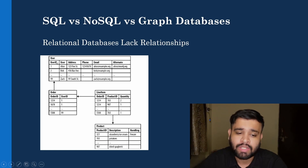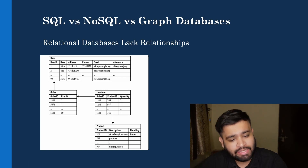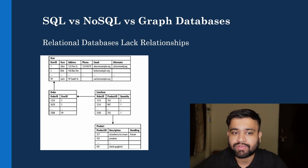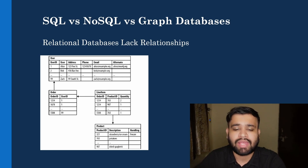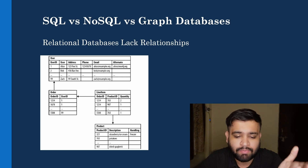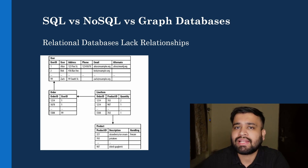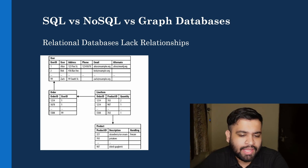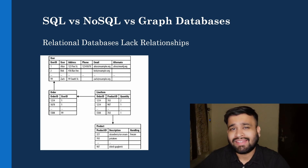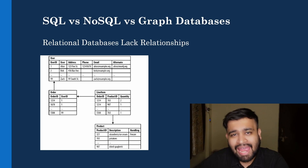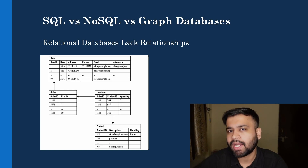In this model we have multiple tables: a user table with all attributes for a particular user, an order table with order ID and user ID, a line item table with product ID and quantity, and a product table with all product details. Maintaining foreign keys across all these tables is a huge task for the database administrator, and the maintenance overhead is higher compared to graph databases.